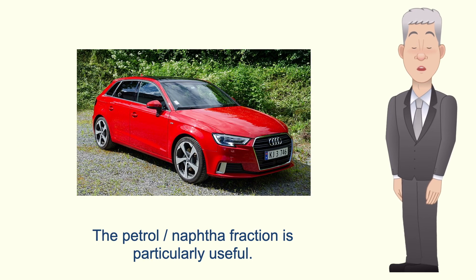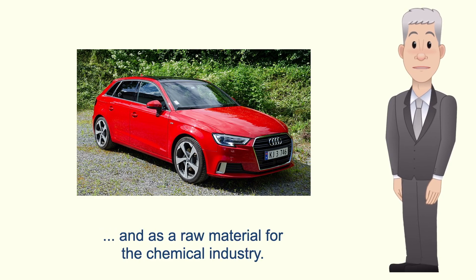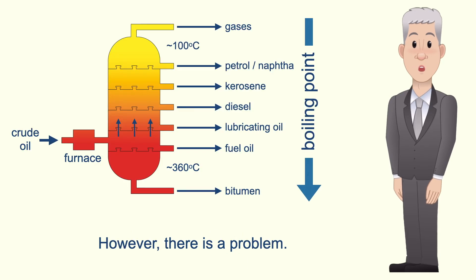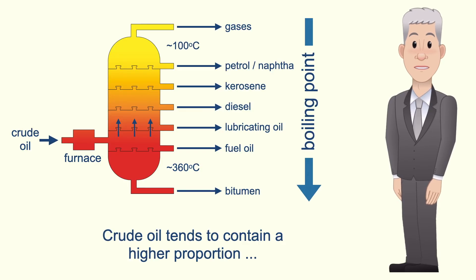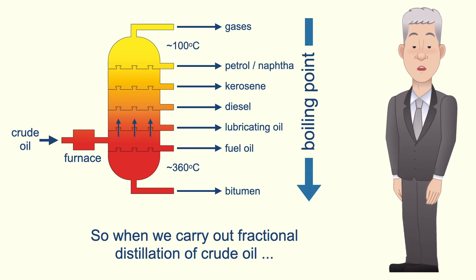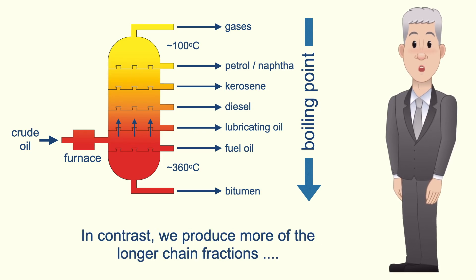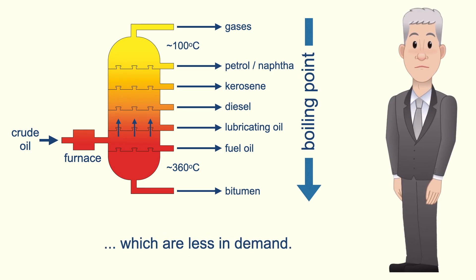Now the petrol-naphtha fraction is particularly useful. This fraction is used to make petrol for vehicles and is a raw material for the chemical industry. However, there is a problem. Crude oil tends to contain a higher proportion of longer chain hydrocarbons than shorter chain. So when we carry out fractional distillation of crude oil we do not produce a large amount of the petrol-naphtha fraction. In contrast, we produce more of the longer chain fractions which are less in demand.